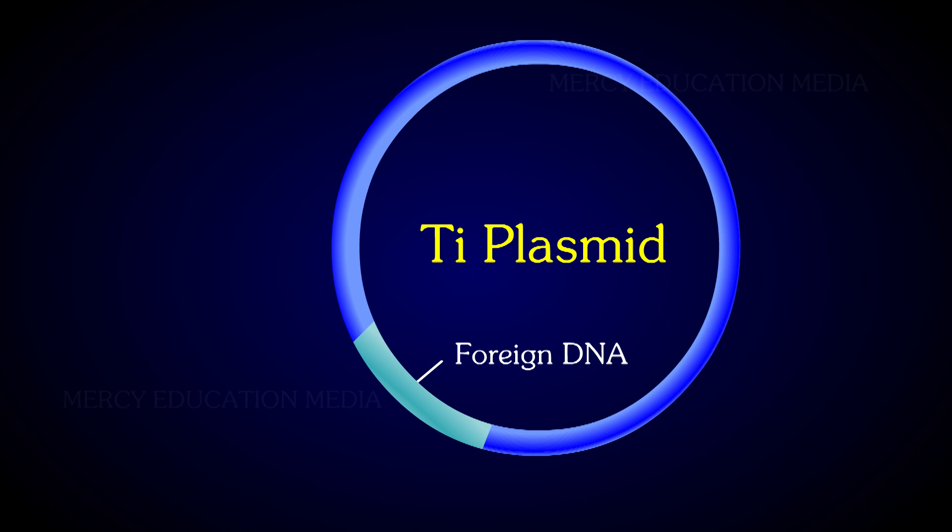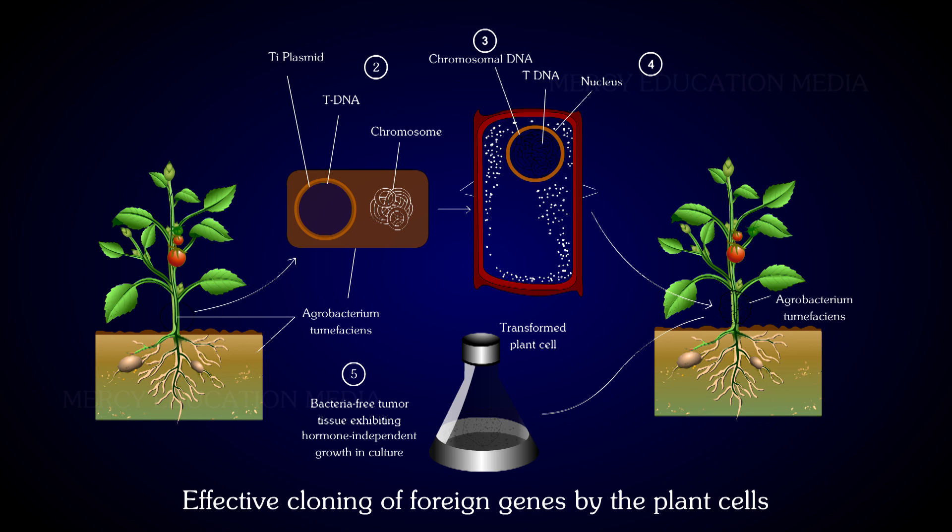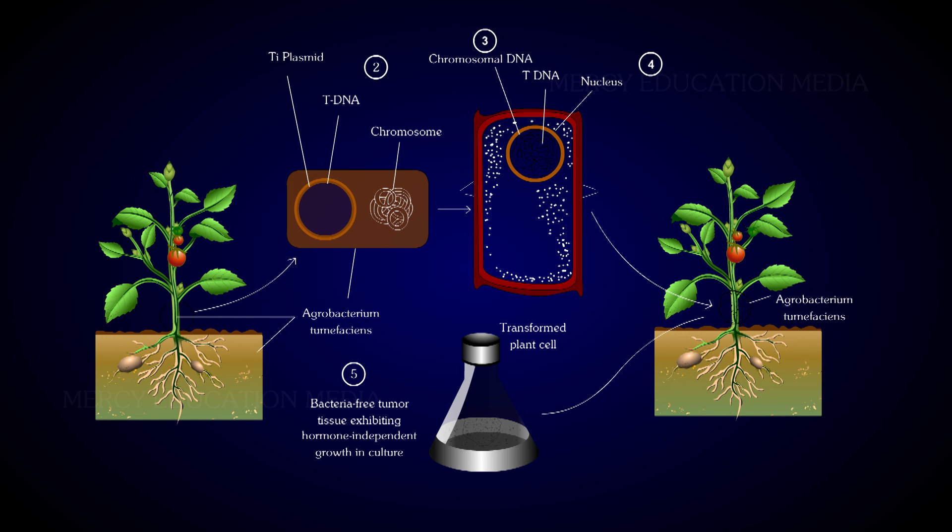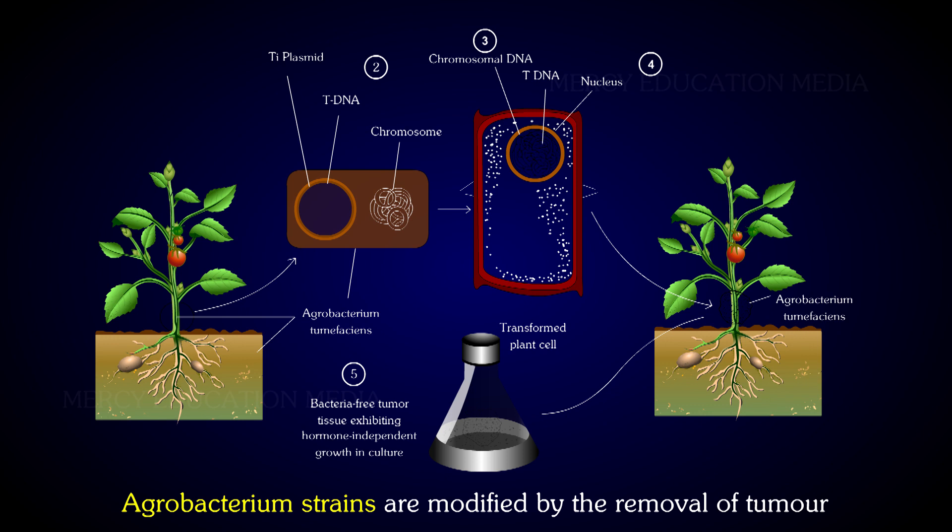The Ti plasmid carried by the pathogenic bacterium causes tumors. For effective cloning and introduction of foreign genes into the plant system, Agrobacterium strains are modified by the removal of the tumor-inducing genes from the bacterium.